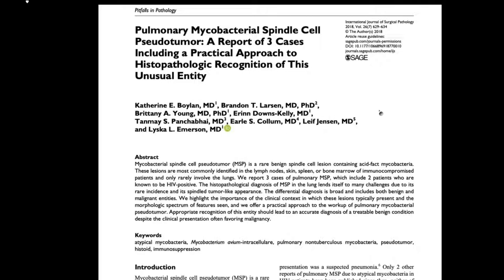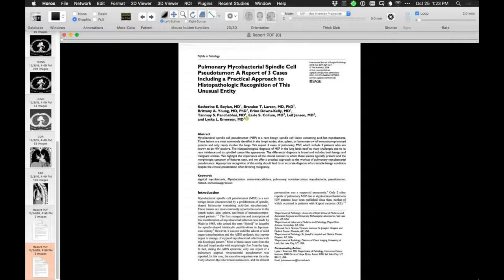Two of the patients were HIV positive. This person is one of three in a recently published case report. It's some kind of acid-fast mycobacterial lesion — I've never heard of it before. I know that patients with HIV can get some kind of spindle cell or myogenic lesion that can cause a nodule, but I've never heard of this specifically. They call it a pulmonary mycobacterial spindle cell pseudotumor — like a gumma, a syphilitic tumor. Just put that in your library of odd things.